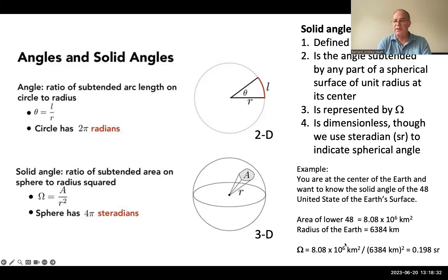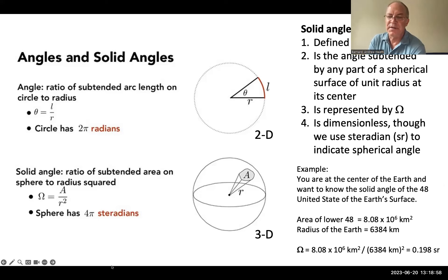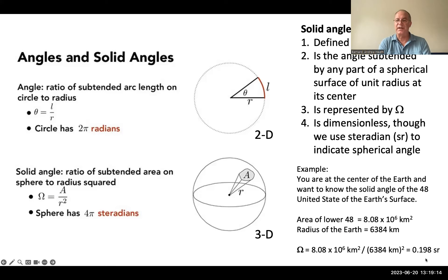For example, if you're standing at the center of the Earth and you want to know the solid angle of the lower 48 states, you need the surface area of the lower 48 states, which is 8.08 × 10⁶ km². With the Earth's radius of approximately 6,384 km, you can easily calculate the solid angle of the lower 48 states, which turns out to be about 0.198 steradians.